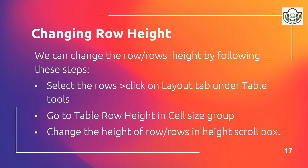We can change the row height by following these steps: select the row, click on Layout, then go to the Table Row Height in the Cell Size group, and change the height of the row using the height scroll bar.